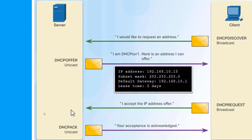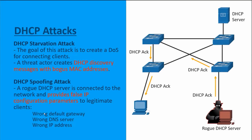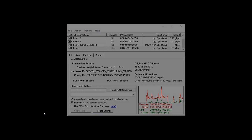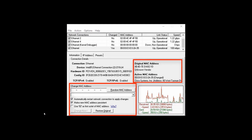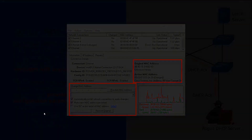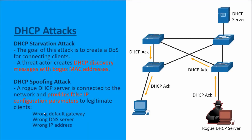Now there are two common types of DHCP attacks: DHCP starvation and DHCP spoofing. With DHCP starvation, the goal of the threat actor is to create a denial of service for your connecting clients. The threat actor would gobble up all of the usable DHCP-provided addresses. The easiest way to do this is having a threat actor use a client machine that's cycling through source MAC addresses very quickly, gobbling up an available IP address for each source MAC from the DHCP server. When all the addresses are taken, there's nothing left to provide the legitimate clients.